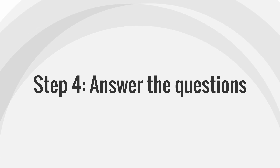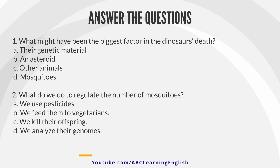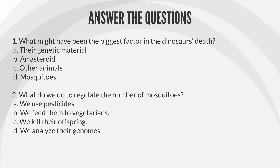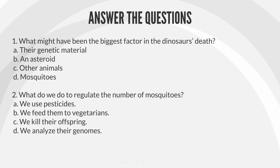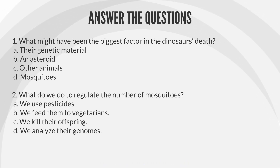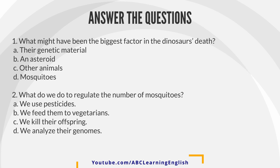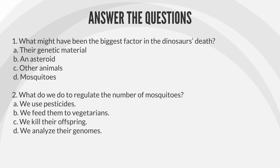Step 4. Answer the questions. 1. What might have been the biggest factor in the dinosaur's death? A. Their genetic material. B. An asteroid. C. Other animals. D. Mosquitoes. 2. What do we do to regulate the number of mosquitoes? A. We use pesticides. B. We feed them to vegetarians. C. We kill their offspring. D. We analyze their genomes.